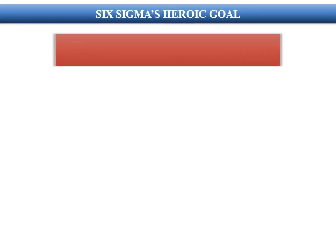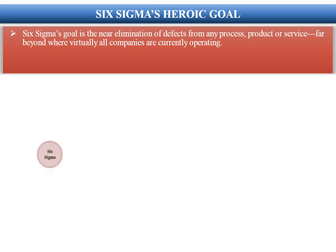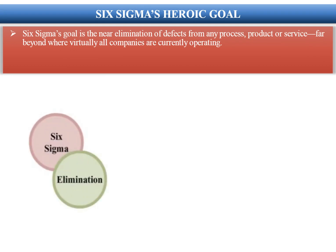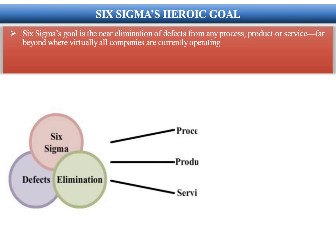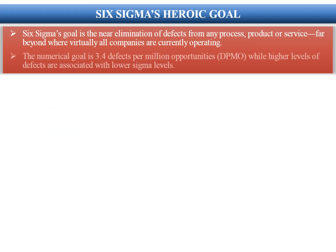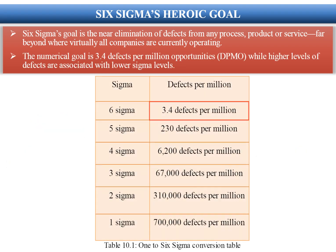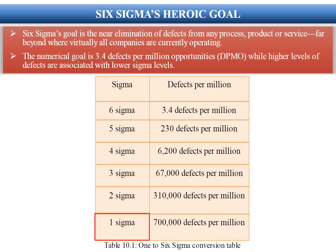Six Sigma's Heroic Goal: Six Sigma's goal is the near elimination of defects from any process, product, or service, far beyond where virtually all companies are currently operating. The numerical goal is 3.4 defects per million opportunities (DPMO), while higher levels of defects are associated with lower Sigma levels.